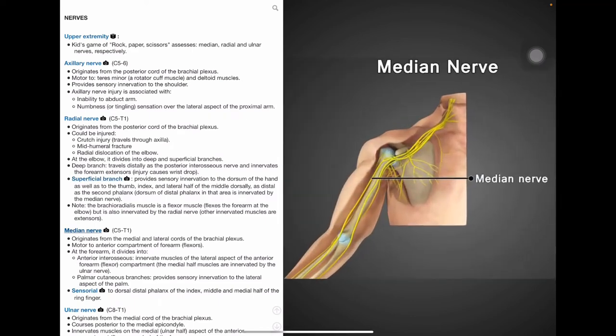Moving on to the median nerve. The median nerve provides motor innervation to the anterior compartment of the forearm, known as flexors. Originating from the medial and lateral cords of the brachial plexus, it divides into the anterior interosseous and palmar cutaneous branches at the forearm. The anterior interosseous innervates the lateral flexor compartment while the medial half is innervated by the ulnar nerve. Sensory innervation to the lateral aspect of the palm and to the dorsal distal phalanx of the index, middle, and medial half of the ring finger is provided by the palmar cutaneous branches. In rock paper scissors, the rock movement with your hand tests the median nerve because of the motion finger flexion.